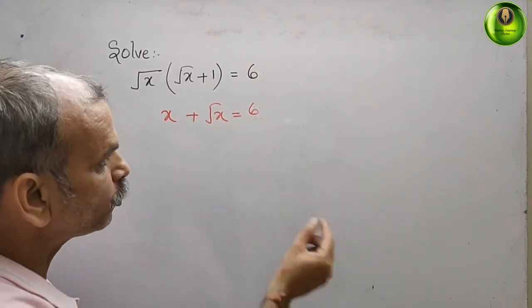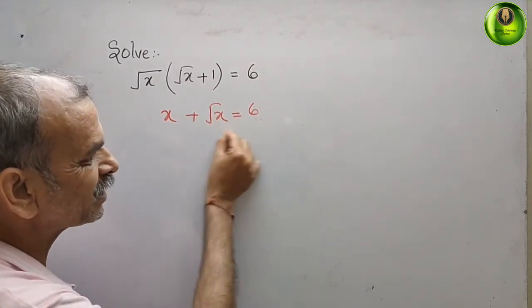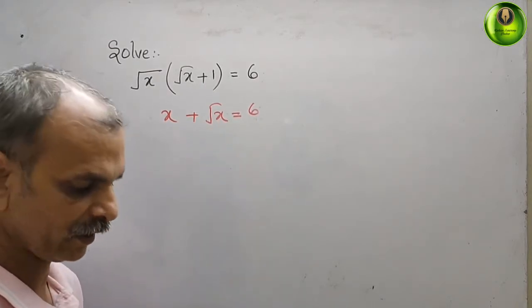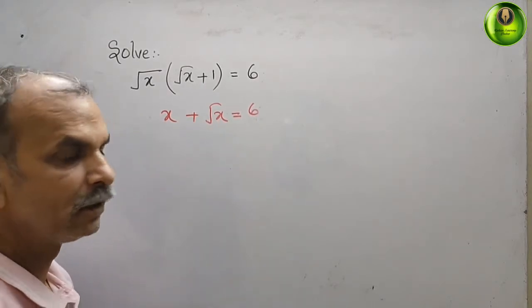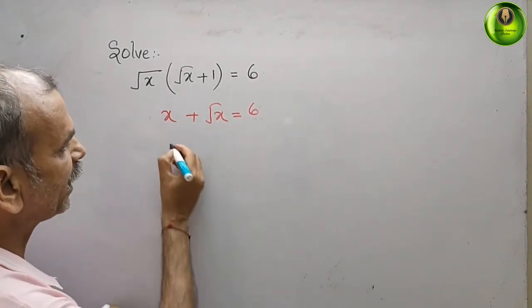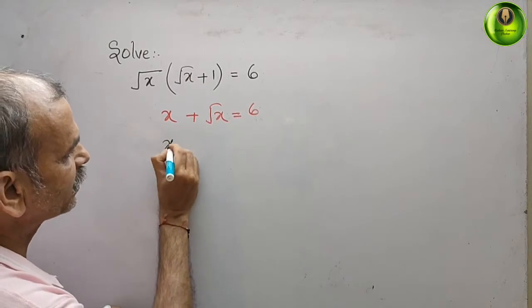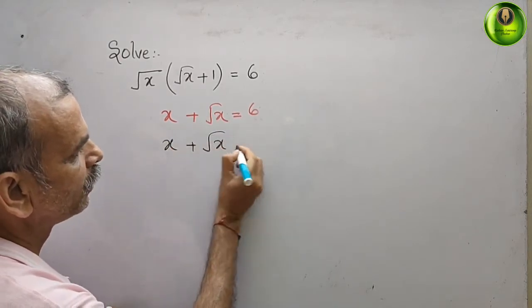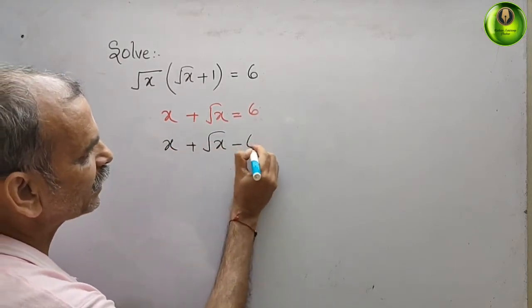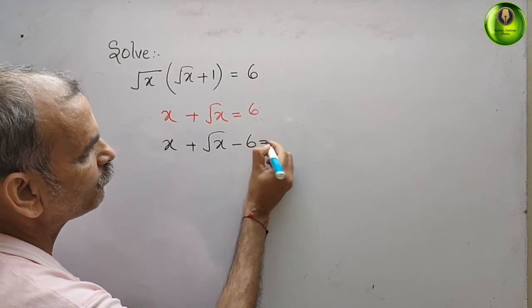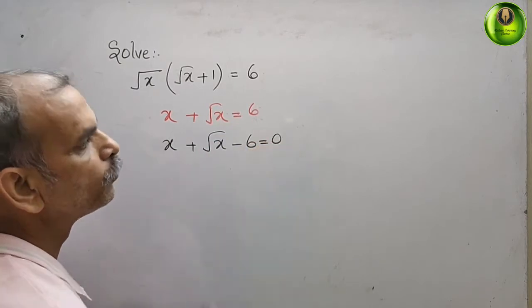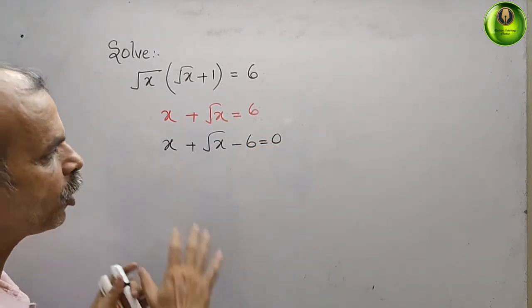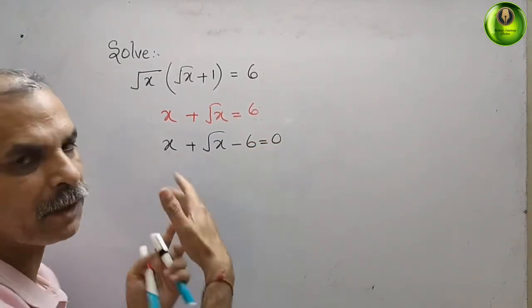Now bring 6 to the left side — it becomes minus 6. So we get x + √x - 6 = 0.